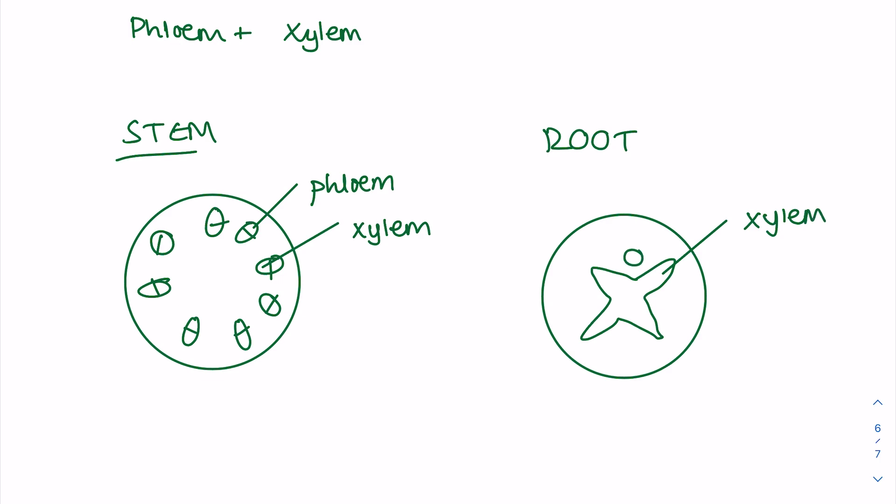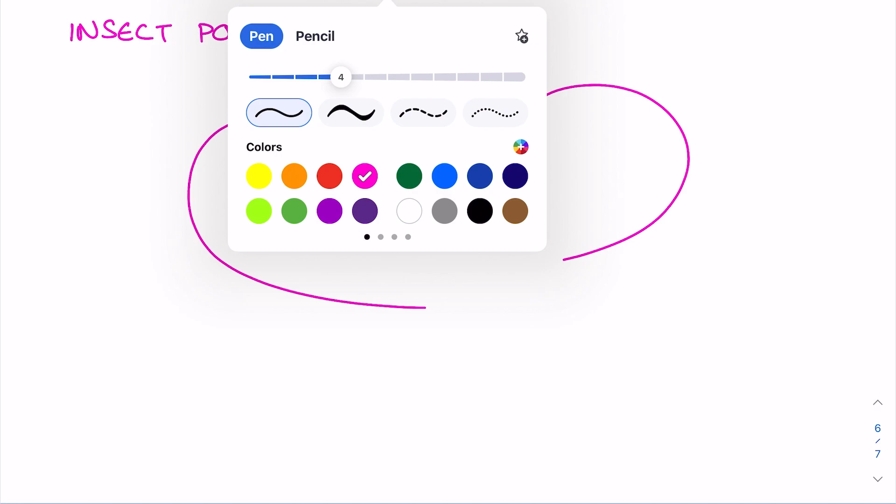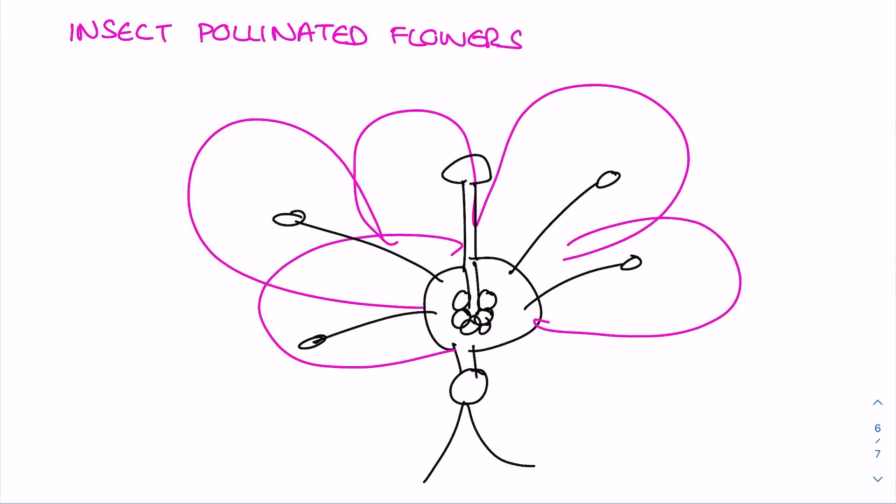Some insect pollinated flowers. Now again just be able to label this. So I'm going to draw some bright colorful flag-like petals. Right let's see how we get on with this then. So as I already said, here are your bright, large, colorful petals, and that's something that you'll certainly have in an insect pollinated flower, as well as a structure down here called the nectary that provides sugar to the insect.